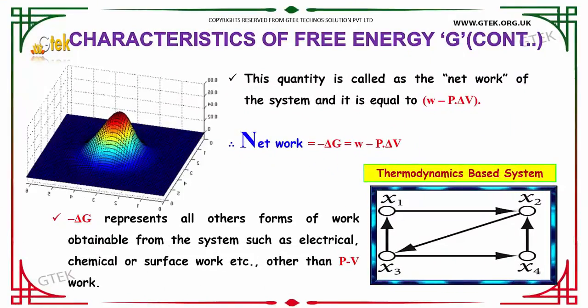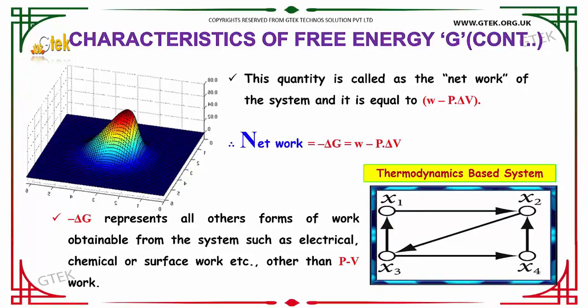This quantity is called as the network of the system and it is equal to W minus P into delta V. Network is equal to minus delta G is equal to W minus P into delta V. Minus delta G represents all other forms of work obtainable from the system such as electrical, chemical, or surface work other than P minus V work.